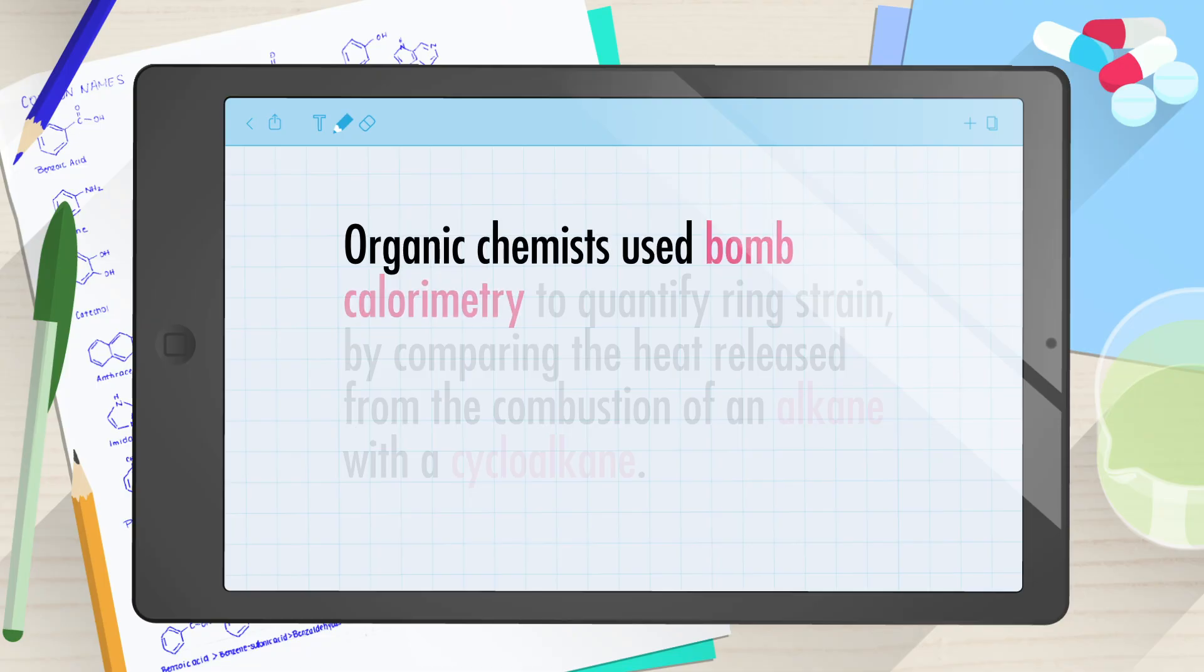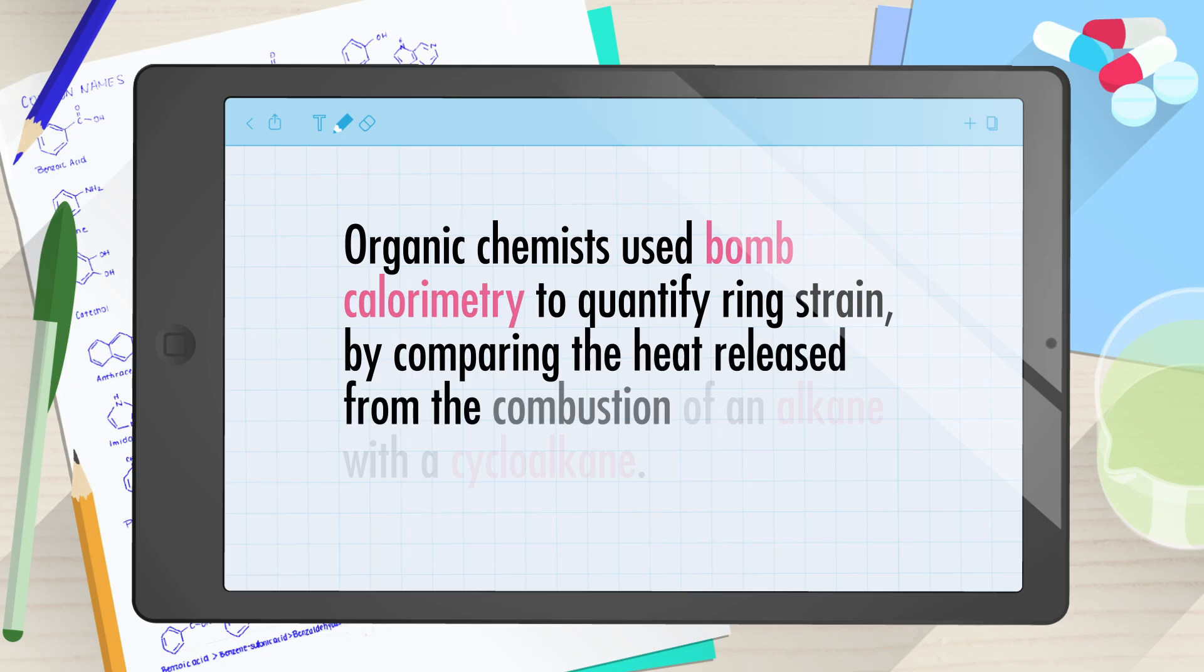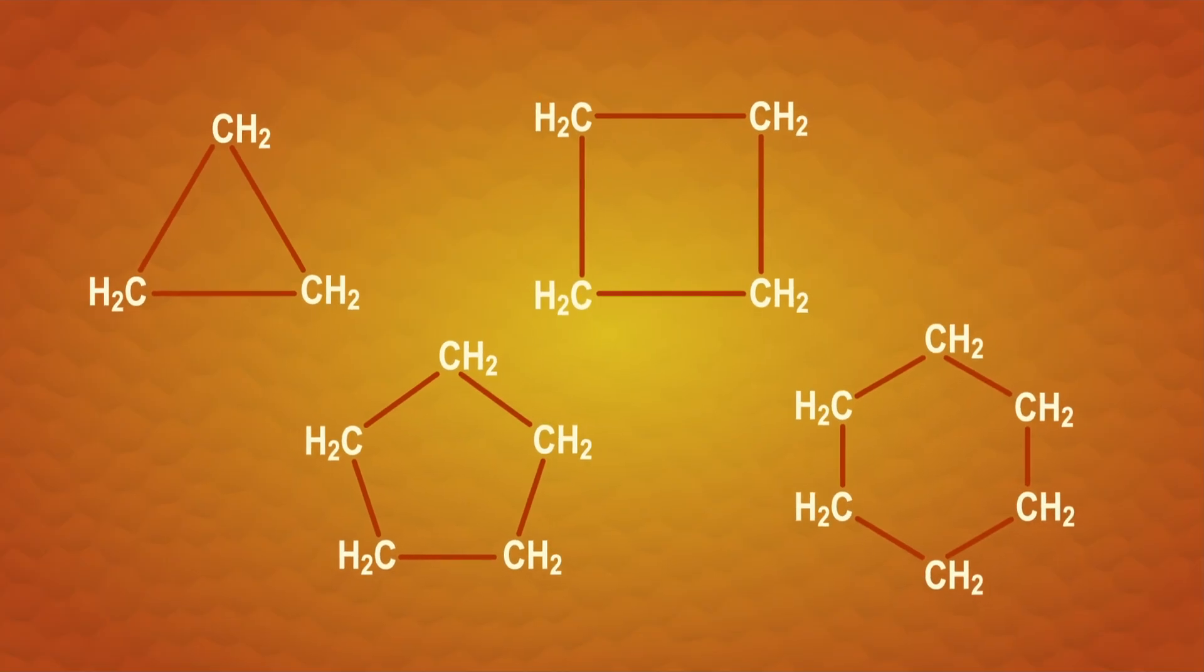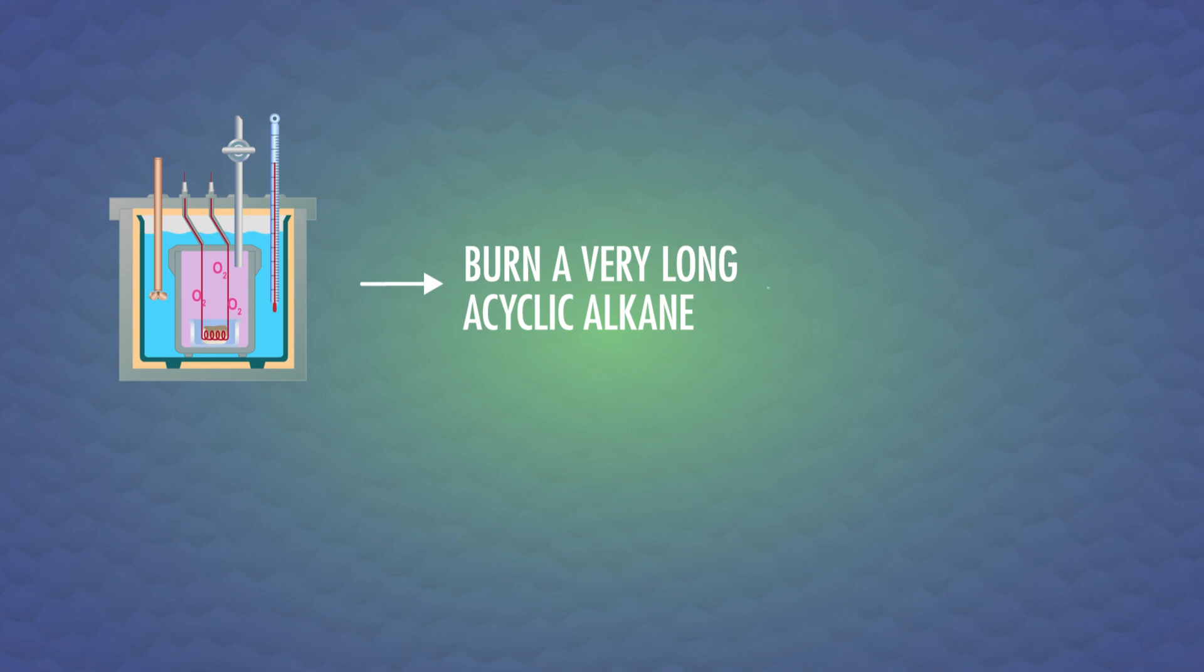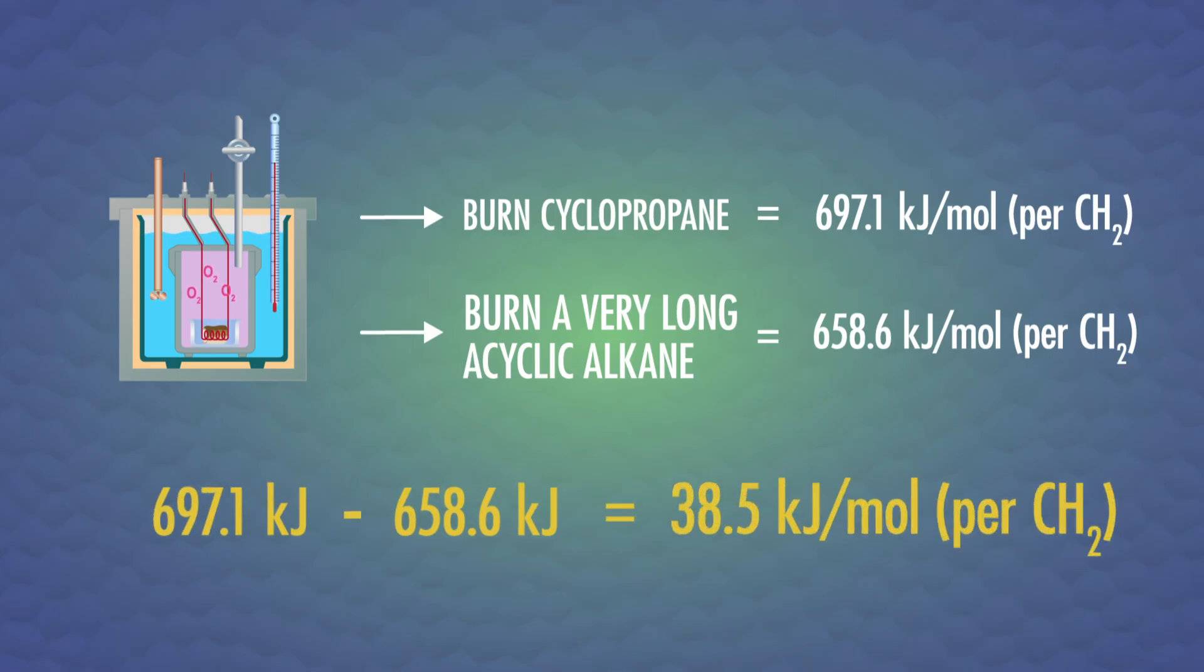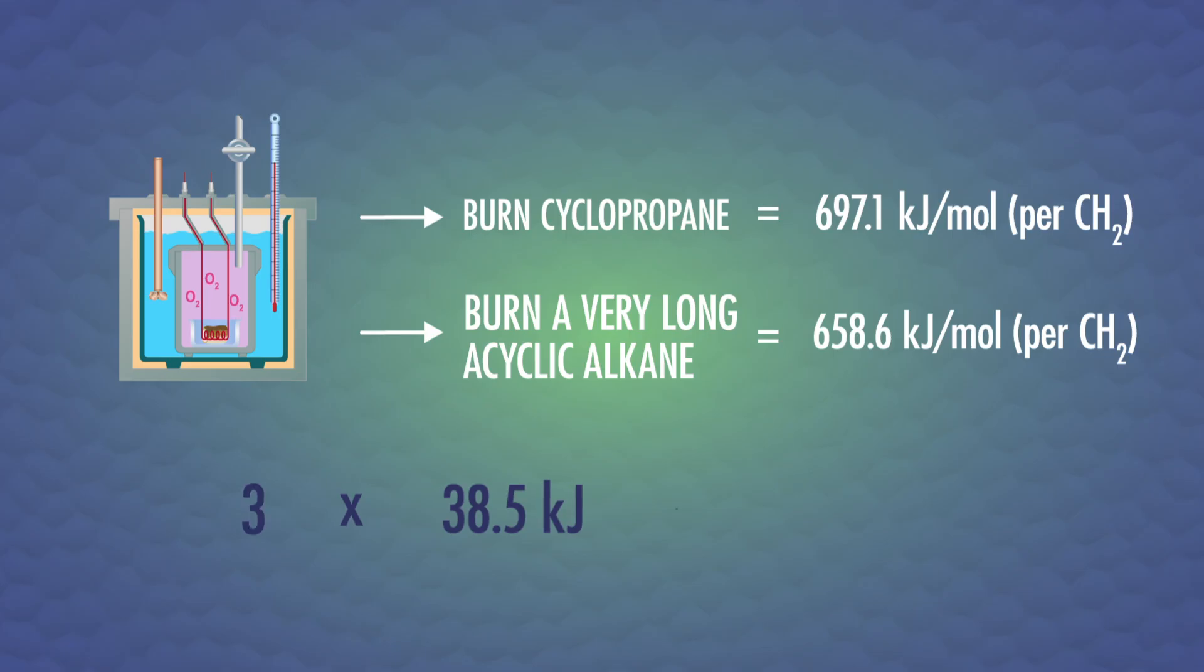Organic chemists use bomb calorimetry to quantify ring strain by comparing the heat released from the combustion of an alkane with the cycloalkane. Any extra heat from the cycloalkane has to be from the energy of the ring strain being released. For example, we can use a bomb calorimeter to burn a very long acyclic alkane and find that the average energy released per CH2 unit is 658.6 kJ per mole. And when we burn cyclopropane, which we know is a very strained ring, it releases 697.1 kJ per mole per CH2 unit. So the ring strain energy contributed 38.5 kJ per mole. We have to multiply that by 3 for the 3 CH2 units in cyclopropane, for a total of 115 kJ per mole. That's quite a bit of extra energy packed into that ring. Thanks, math! And thank you, Thought Bubble!